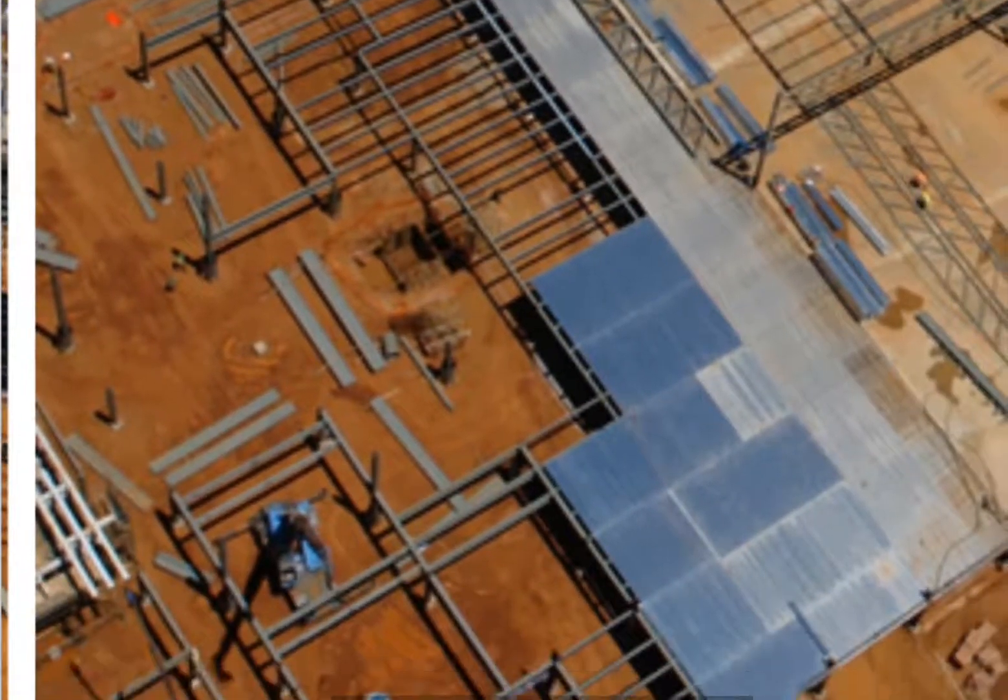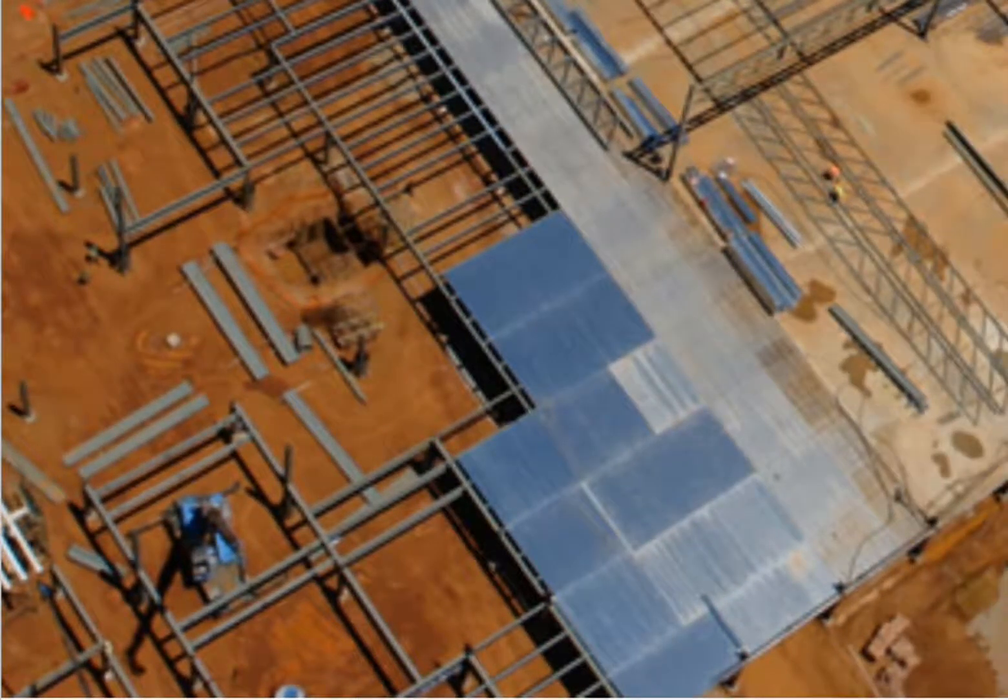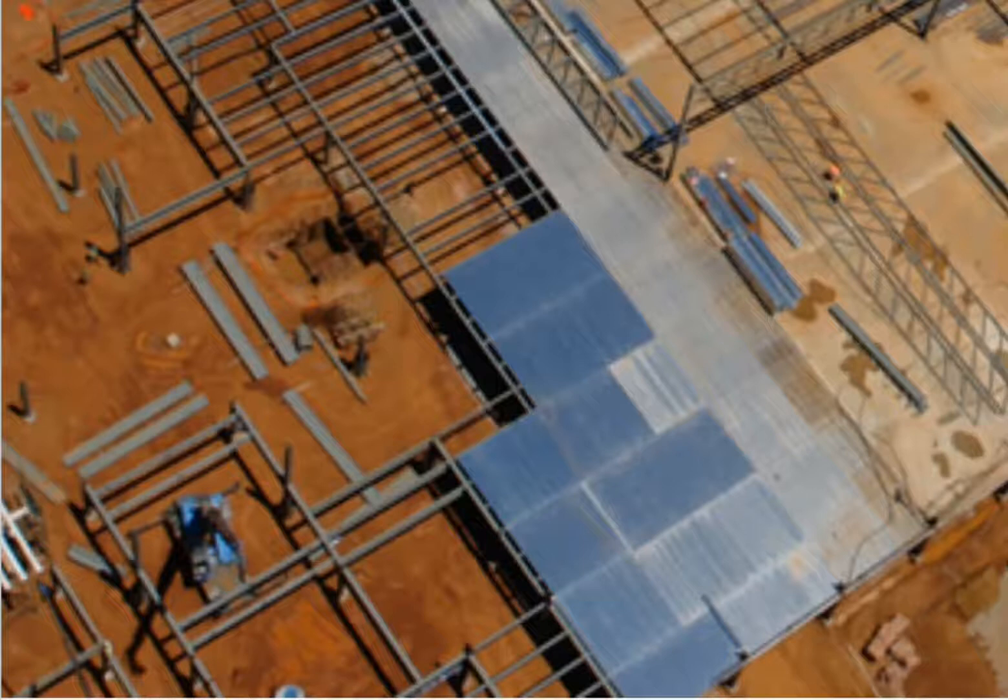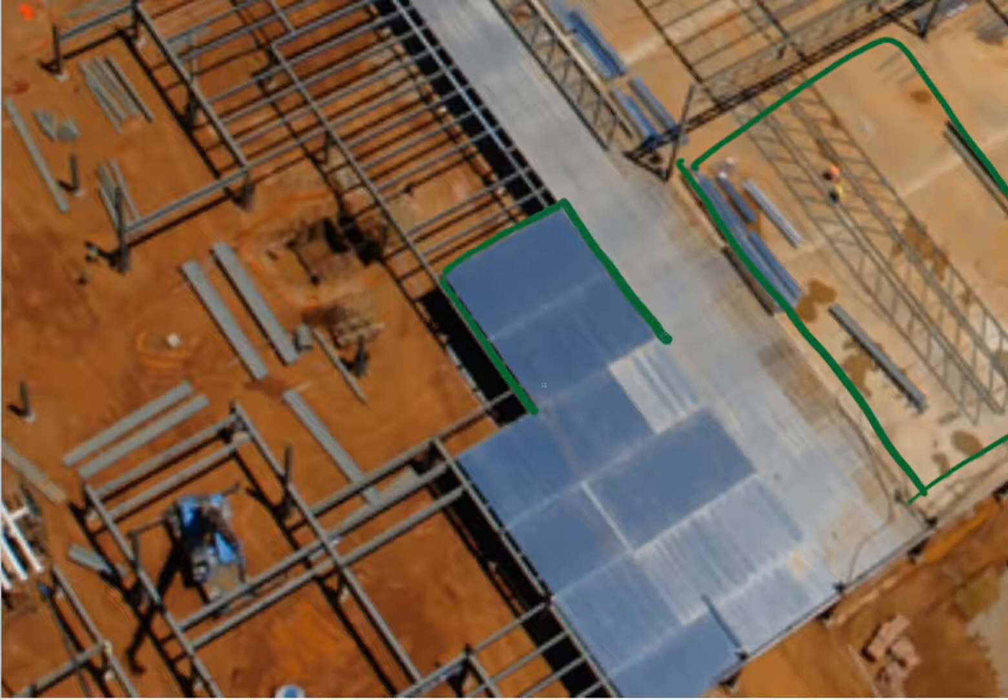The next picture shows an aerial view of that same factory being built, where on the right hand side you've got the completed concrete floor. Here you can see where the decking has gone in. They take the decking and put it on top of the steel beams.